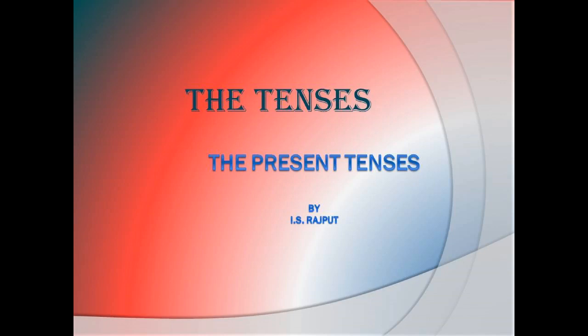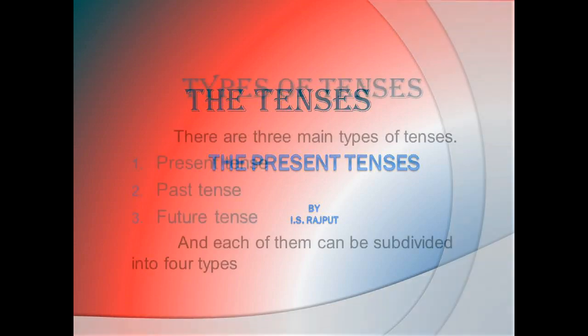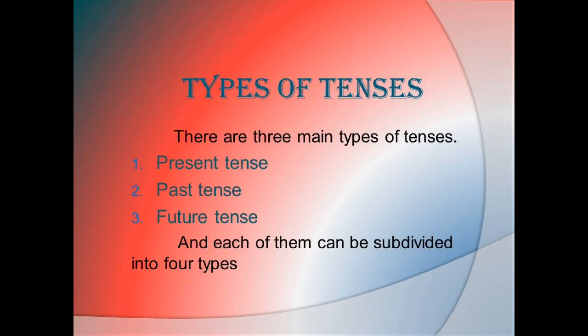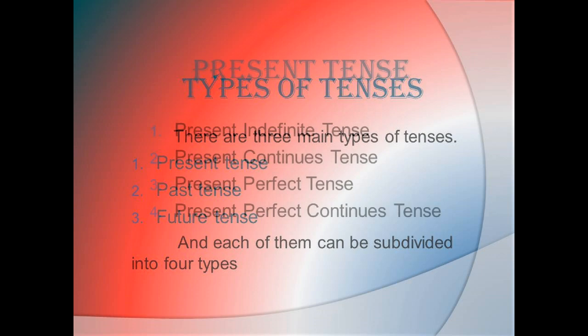In this lecture, we shall study about present tenses, the types of present tenses, and the rules we should follow to make sentences. There are three main types of tenses: present tense, past tense, and future tense. Each of them can be divided into four further categories.